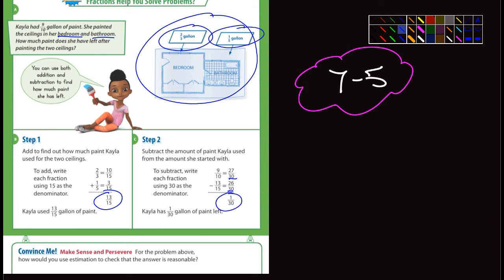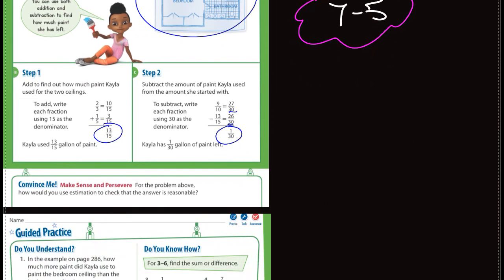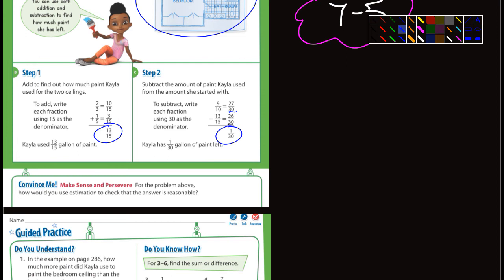So let's take a look at the convince me. It says for the problem, how would you estimate to check to see that the answer is reasonable? Well, if you're going to estimate, really the only way you can estimate different fractions with different denominators is to turn them into fractions with the same denominators and that's what they did here in step two, 27 over 30 versus 26 over 30. Both of those are close to 30 over 30, so really if you just rounded those to 1 each it'd be 1 subtract 1 equals 0 and that's a pretty good estimate because 1 out of 30, that's pretty close to 0. So that's how I would do it.